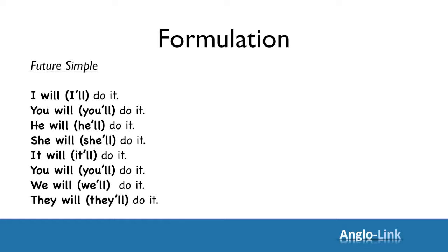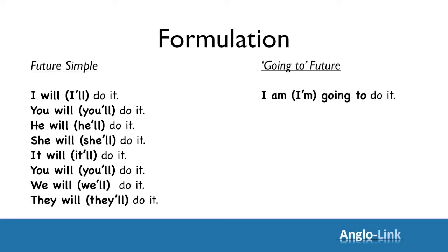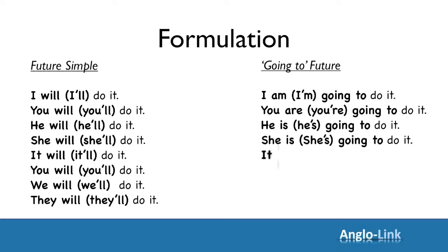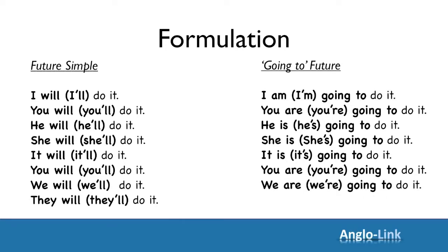You'll notice that will contracts to 'll. Now let's look at the formulation of the going to future. For going to future you simply conjugate the verb to be, then add going to and then the infinitive. I'm going to do it. You're going to do it. He's going to do it. She's going to do it. It's going to do it. You're going to do it. We're going to do it. And finally, they're going to do it.